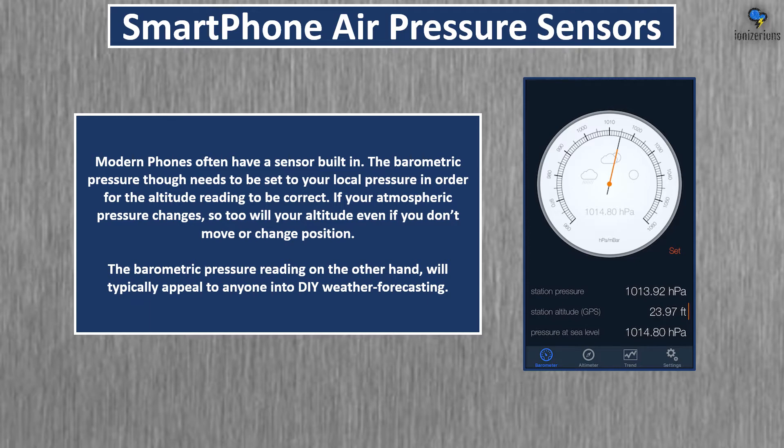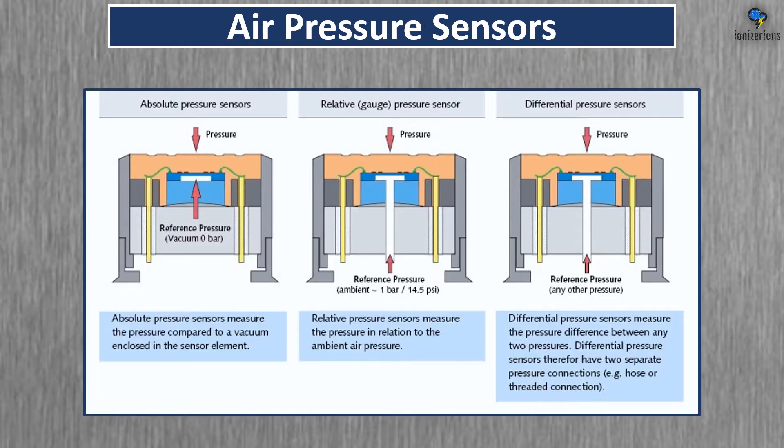If your atmospheric pressure changes, so too will your altitude even if you don't move or change position. The barometric pressure reading will typically appeal to anyone interested in weather forecasting. There are many types of air pressure sensors: absolute pressure sensors, relative gauge pressure sensors, and differential pressure sensors.